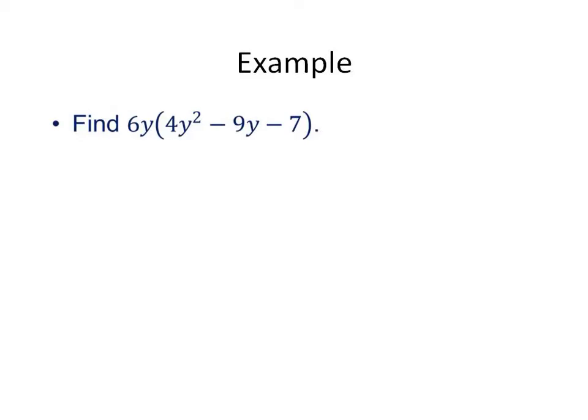Here's our first example. We have 6y times the quantity 4y squared minus 9y minus 7. We're going to take 6y and distribute it to all three terms. Watch your signs. 6y times 4y, first of all we get 24 because we're multiplying the numbers, then y cubed because we add our exponents when we multiply.